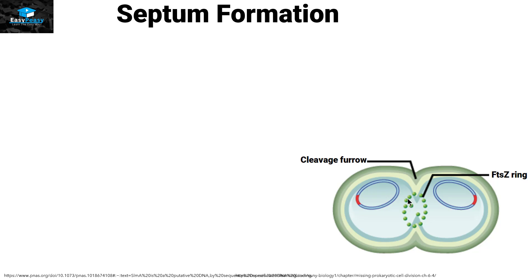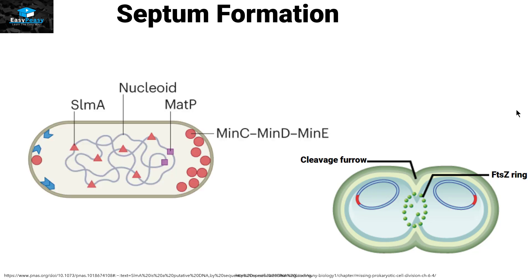The next step is called septum formation. As discussed earlier, the green circle FtsZ proteins present in the cell are going to form a ring-like structure in the middle of the cytoplasm to divide the cell into two daughter cells. In this picture, we can see some new proteins. At this point, the nucleoid is not yet replicated and segregated, but new proteins are still attached to this nucleoid.